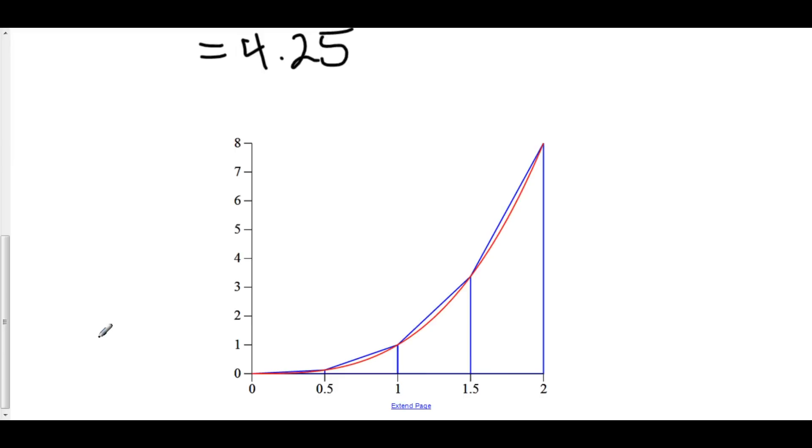And the blue lines are the trapezoids that are used to approximate the area underneath the curve. And we can see that this approximation is a lot better than the Riemann approximations using LRAM, RRAM, or MRAM.